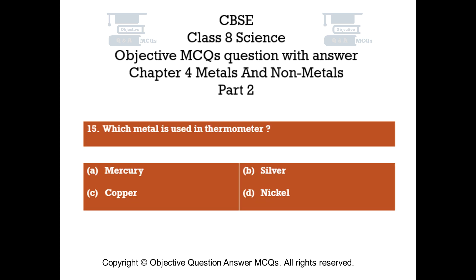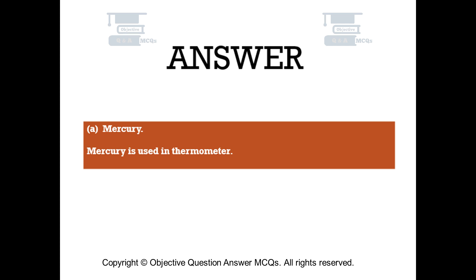Question number 15: Which metal is used in thermometer? Option A: Mercury. Option B: Silver. Option C: Copper. Option D: Nickel. The right answer is Option A — Mercury. Mercury is used in thermometer.